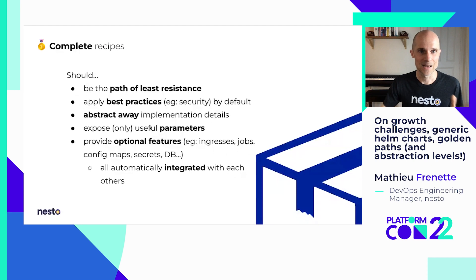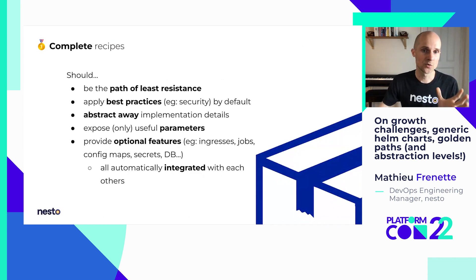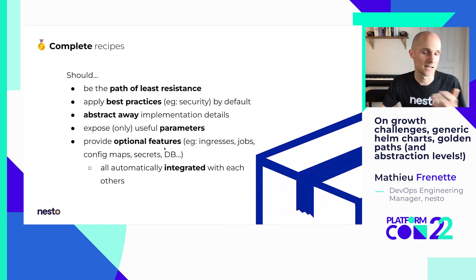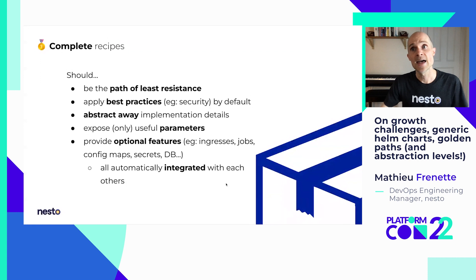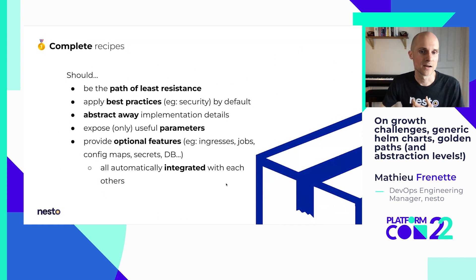One last thing about complete recipes: they provide optional features through feature flags that are turned off by default, unless it's the most likely case. When you turn them on, you want all of them to be automatically integrated together with the microservice or front-end app, without having to go out of your way. They're all pre-wired without having to do anything.